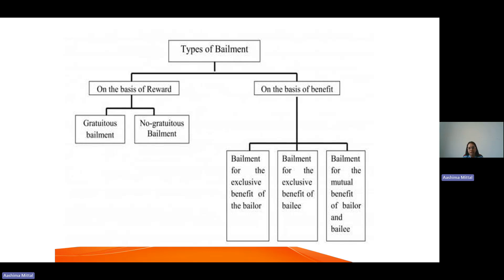Coming to the basis of benefit: in a contract of bailment, there are two parties — the bailor and the bailee. The one who delivers the goods is known as the bailor, and the one to whom the goods are delivered is known as the bailee. On the basis of the benefits received by each of the parties, we have three types. The first is bailment for the exclusive benefit of the bailor, meaning the benefit is availed only by the bailor — there is no benefit to the bailee.